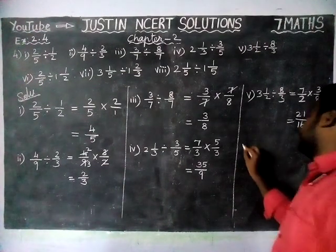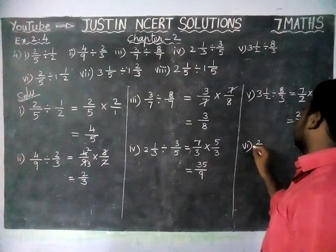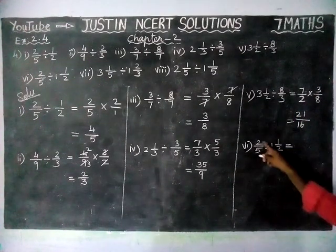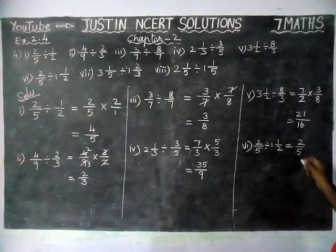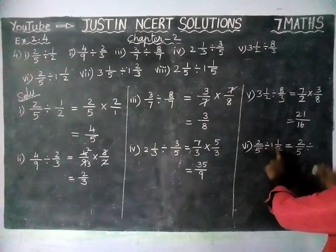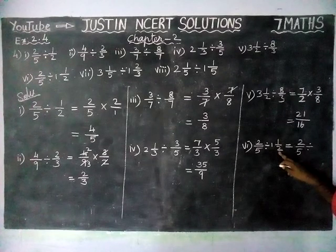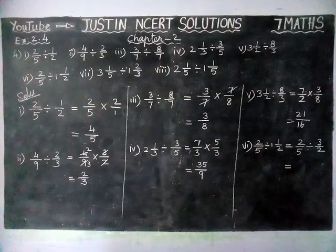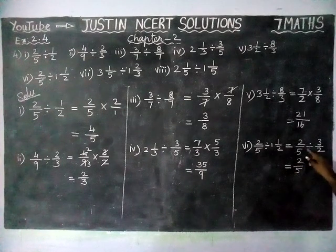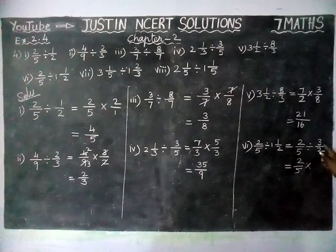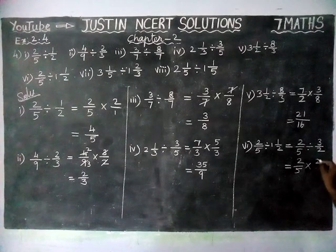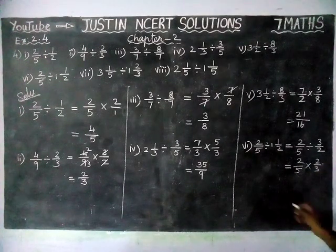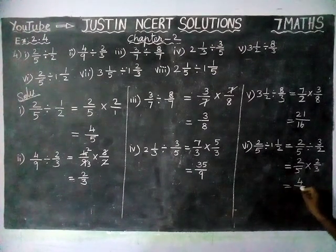Sixth question: 2/5 divide 1½ is equal to — this is a division, so first we convert the mixed fraction into improper fraction. Whole part into denominator plus numerator: 1 times 2 is 2, 2 plus 1 is equal to 3. So, 3/2. Now we have to convert into reciprocal: 2/5 — this division is converted into multiplication — and the reciprocal of 3/2 is 2/3. We cannot cancel here, so multiplying: 2 times 2 is 4, divided by 5 times 3 is 15.